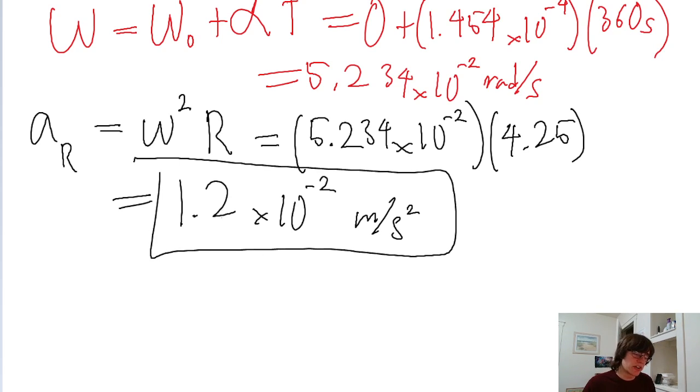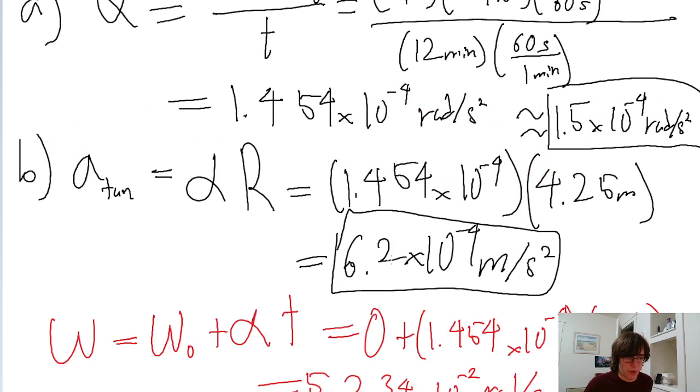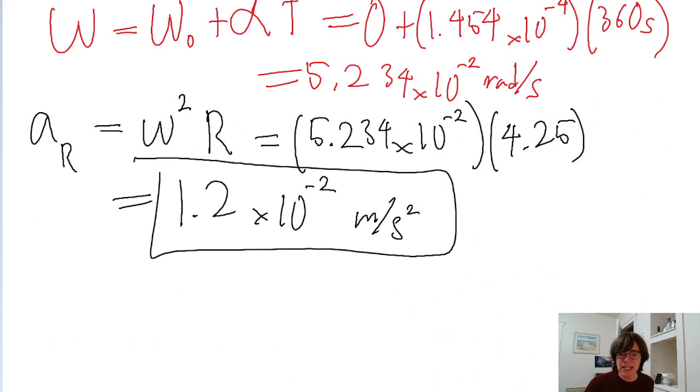This is the radial component of the linear acceleration, and the other thing we found, the 6.2 × 10⁻⁴, is the tangential component. So that is the answer to this problem.